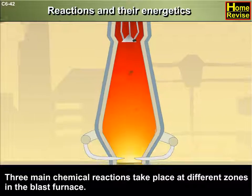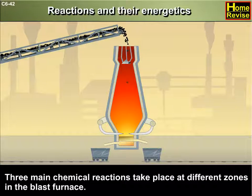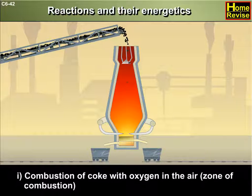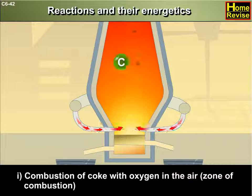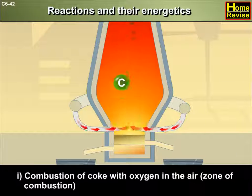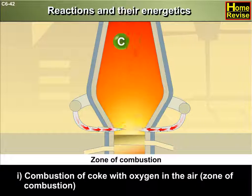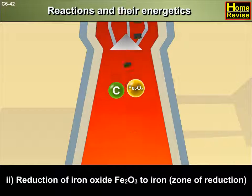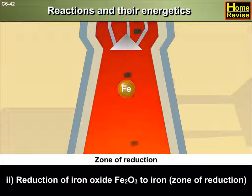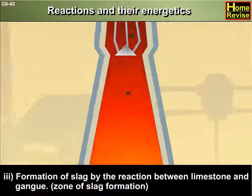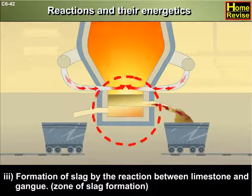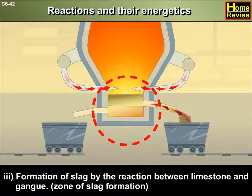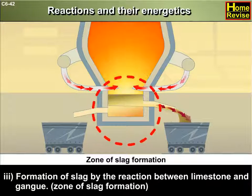Three main chemical reactions take place at different zones in the blast furnace. Number one: combustion of coke with oxygen in the air — that is the zone of combustion. Number two: reduction of iron oxide (Fe2O3) to iron — that is the zone of reduction. Number three: formation of slag by the reaction between limestone and gang — that is the zone of slag formation.